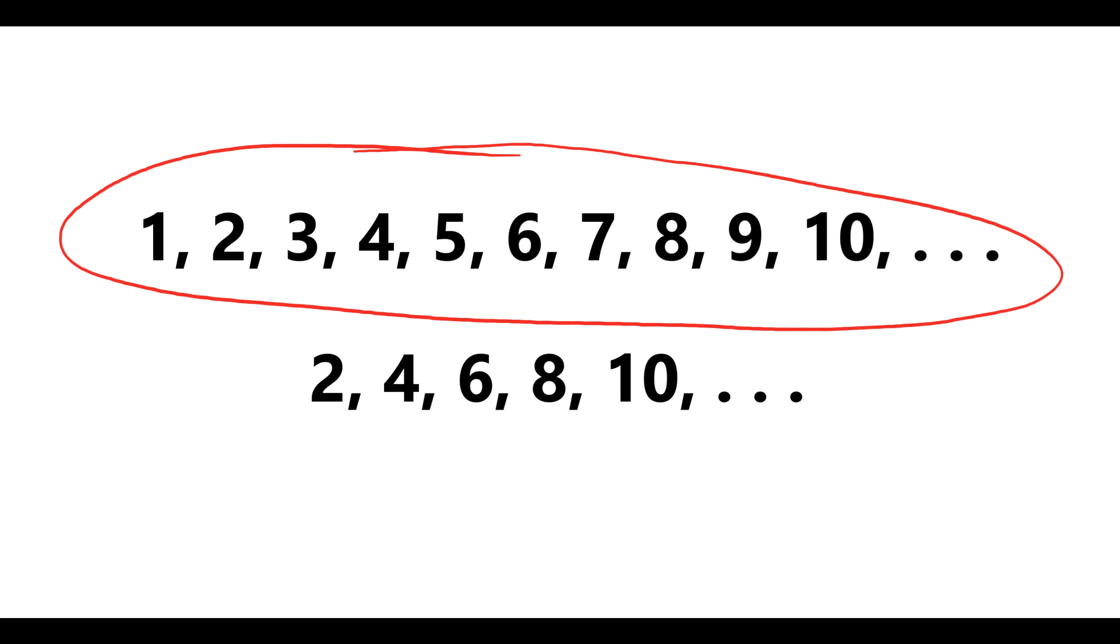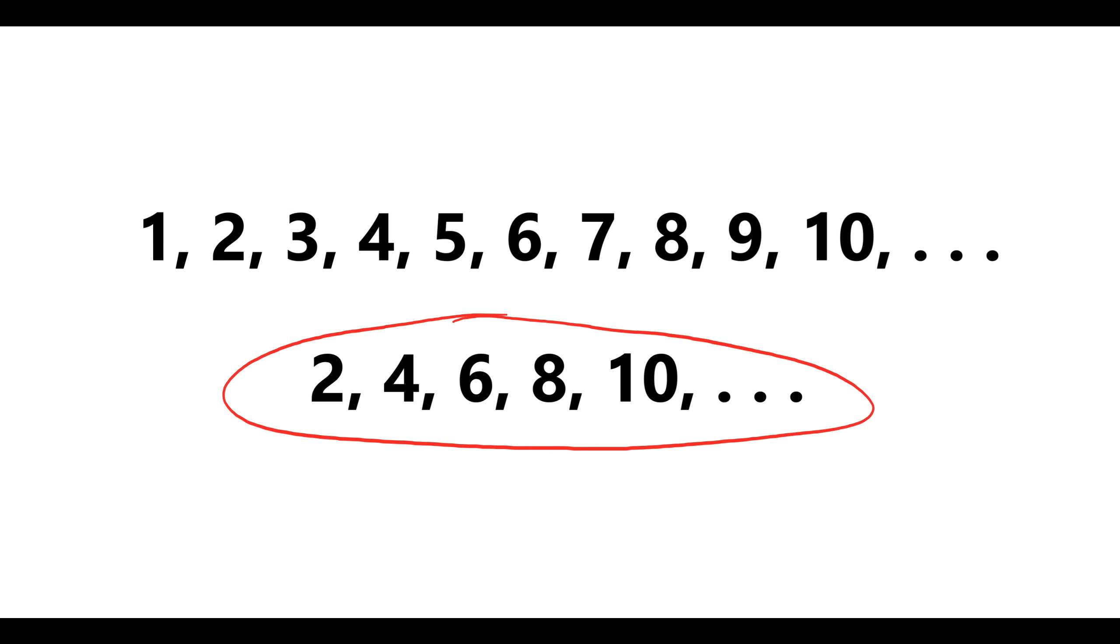This one has infinite elements, and this one also seems to have infinite elements, but clearly the original set with all the numbers is twice as big as the one with only the even numbers. So even though both are infinite in size, the first infinite is probably twice as big as the second one in some sense, right?